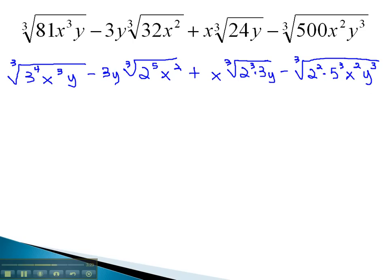We can now go back and simplify by dividing all the exponents by the index, and leaving any remainders behind in the radical. 3 to the 4th, dividing the exponent by 3 gives us 1, and 1, 3 remains in the radical. x cubed, dividing the exponent by 3, means 1x can come out.